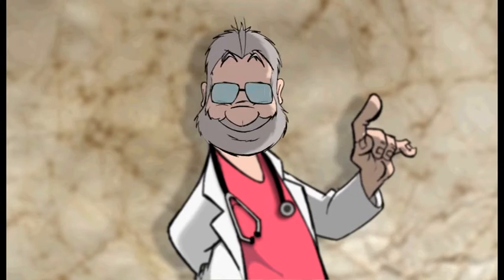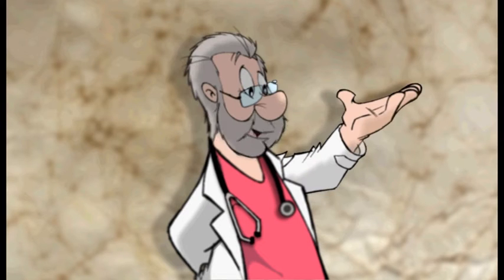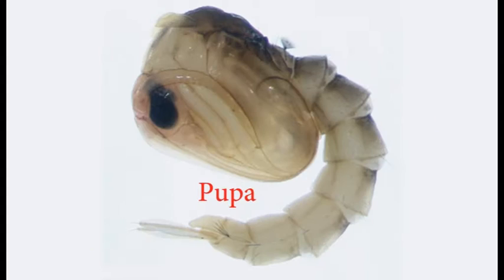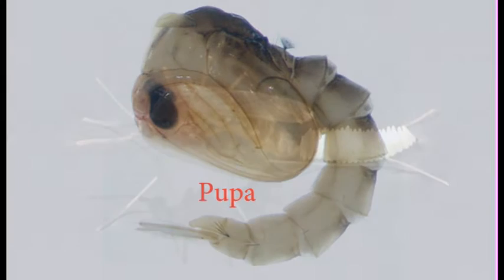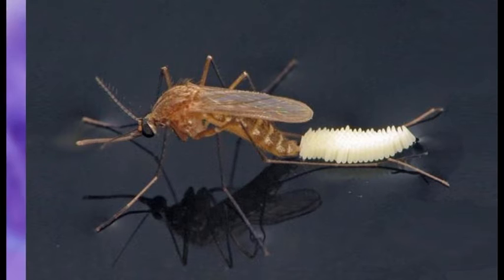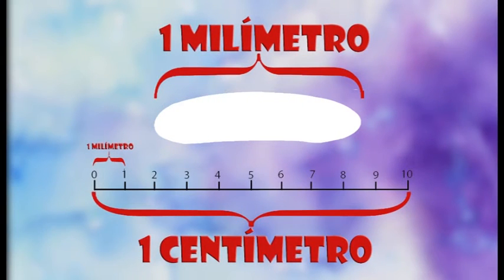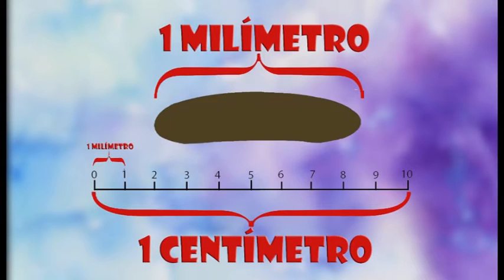Su desarrollo comienza en el agua y tiene tres estadios: huevo, larva y pupa. La mamá mosquito deposita los huevos en lugares de agua tranquila y a la sombra. Sus huevos miden muy poquito, un milímetro, son blancos y al poco tiempo de ser depositados se ponen oscuros o negros.